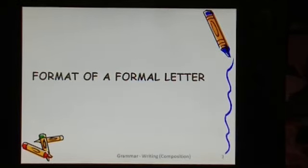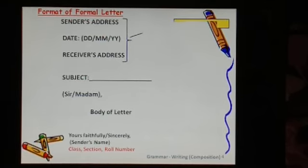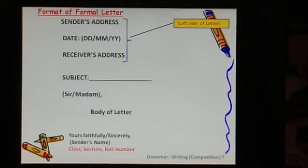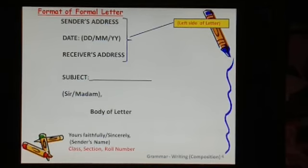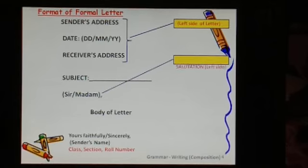Let us see the format of a formal letter. The format goes like this: first you have the sender's address — the person who is writing the letter will write his own address. Followed by the date, that is DD, month, and year. Followed by the receiver's address, meaning the person who will be receiving the letter — that person's address will be there. Then we have the subject, where we mention the purpose of writing the letter.